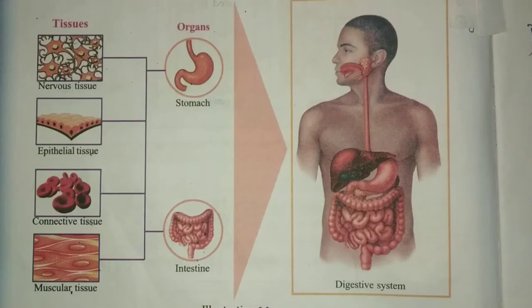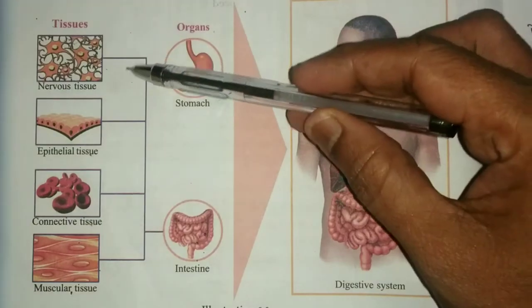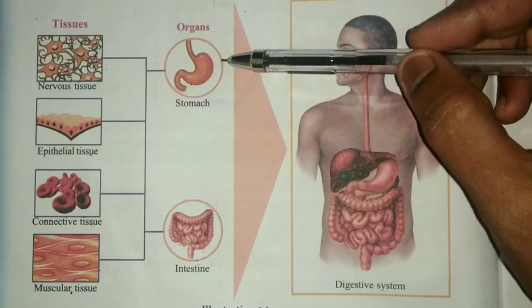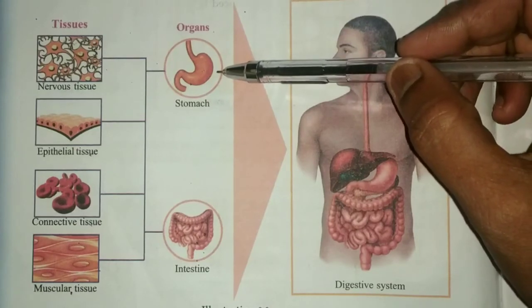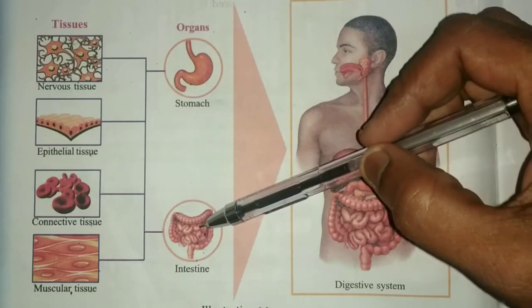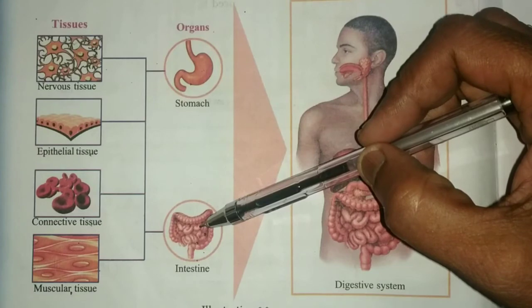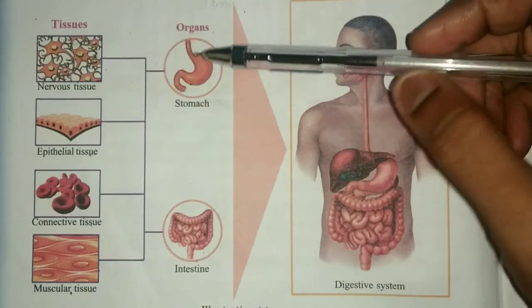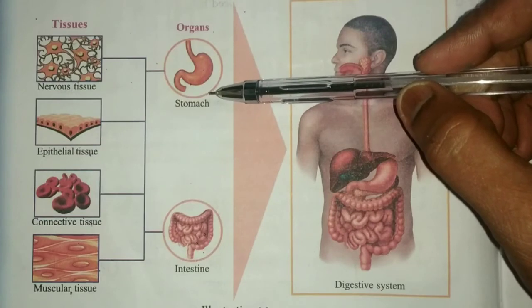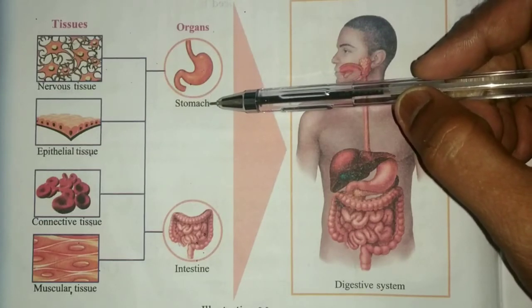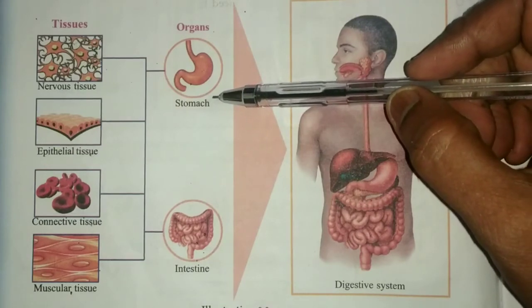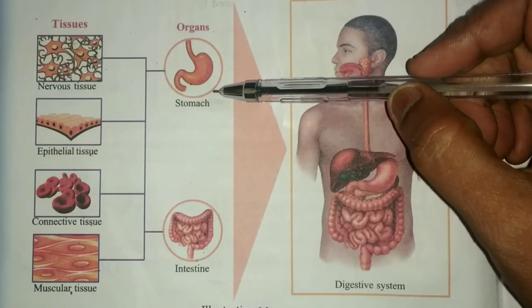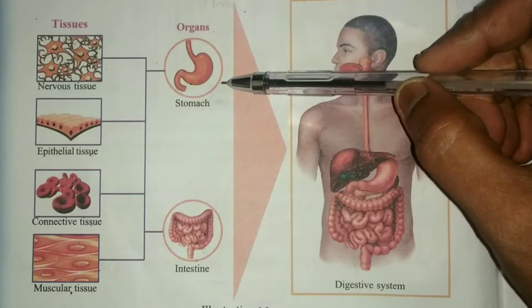Is the function performed by an organ the same as the function of its constituent tissues? The stomach helps in digestion and absorption of digestive nutrients, but the constituent tissues differ in their function. So, the function performed by an organ is not the same as the function performed by its constituent tissues. The tissues help the organ to perform its function.